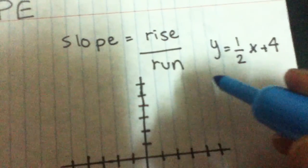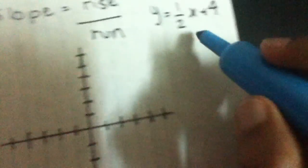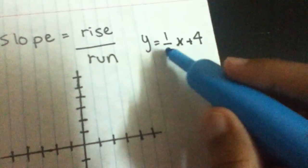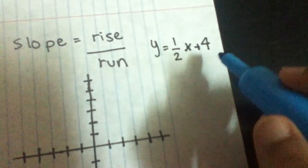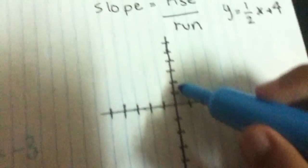Okay, so slope is basically rise over run, and here's a question to test it out. y equals a half x plus 4. So our intercept is 4.